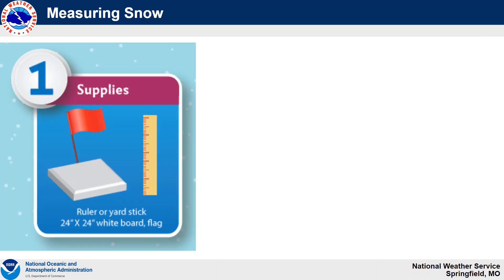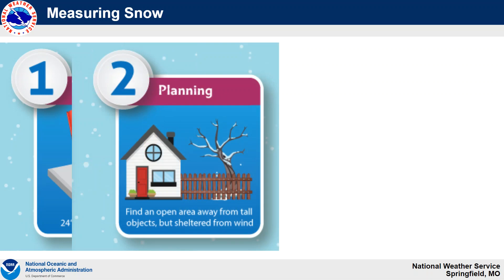When we talk about measuring snow, there are several steps you want to take to really provide an accurate snowfall measurement. That includes first gathering the supplies. It's great if you could find either a board or maybe a piece of plywood — if it's white, that works well because it helps avoid influences from sunshine during the day. Take that whiteboard and put it out in an open area, and also have a little flag to mark near it, and you'll want a ruler. When planning the area, think about staying away from tall objects, trees, and buildings, but also try to be sheltered from the wind.